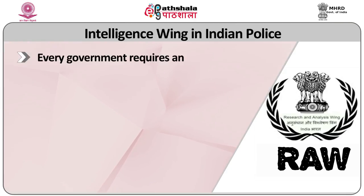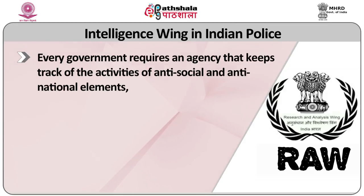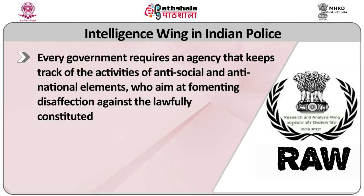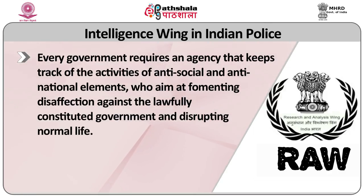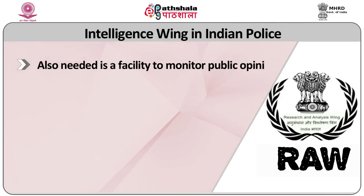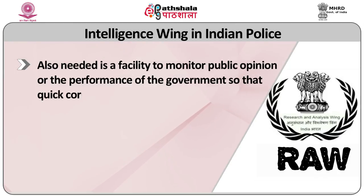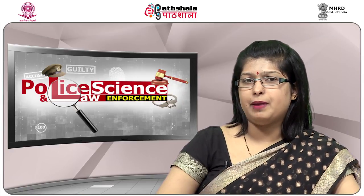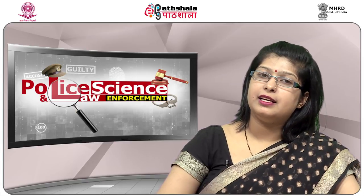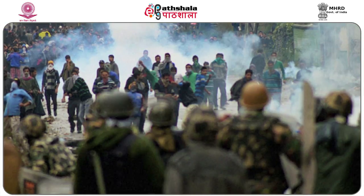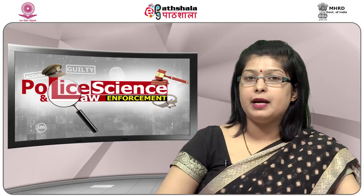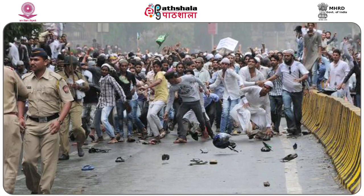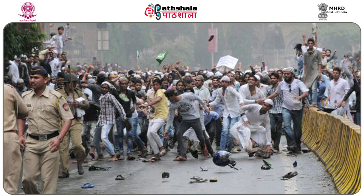Every government requires an agency that keeps track of the activities of anti-social and anti-national elements who aim at fomenting disaffection against the lawfully constituted government and disrupting normal life. Also needed is a facility to monitor public opinion and the performance of the government so that quick corrective action is initiated to prevent a breakdown of law and order or economic stability. This twin role is fulfilled by the intelligence branch at the district and state level. On matters of mutual interest such as terrorism, VIP security, religious feud, especially Hindu-Muslim conflict, the state intelligence coordinates with the Intelligence Bureau of the central government.